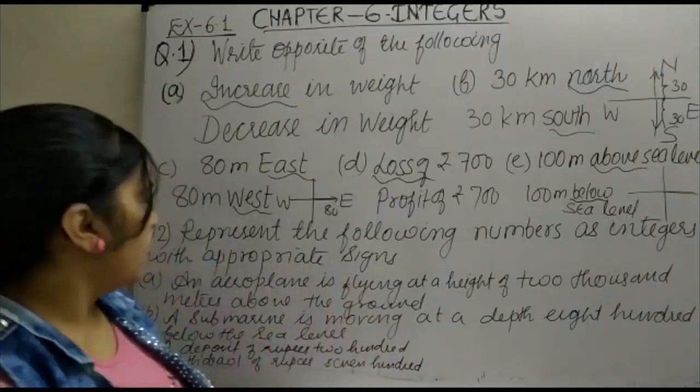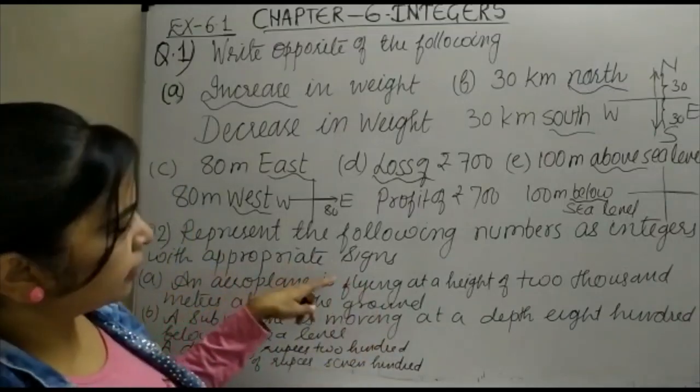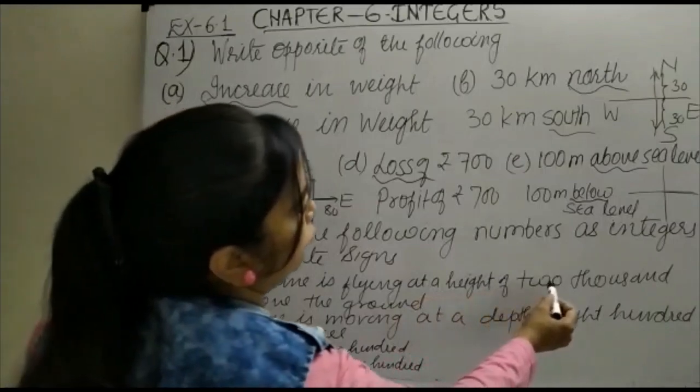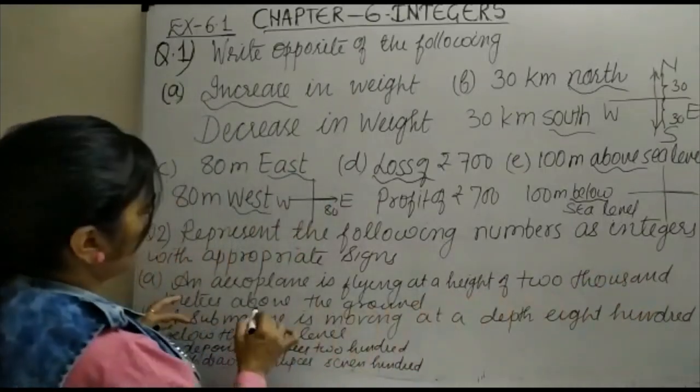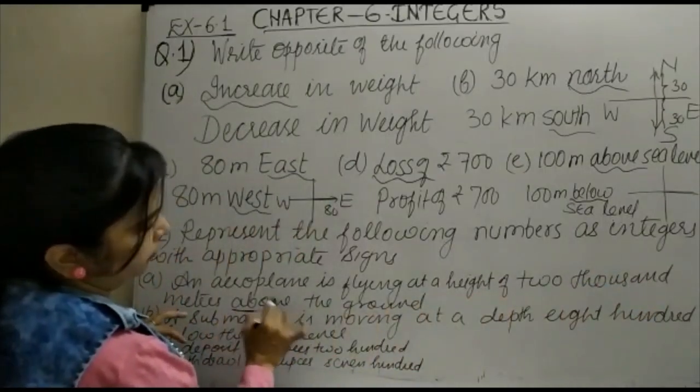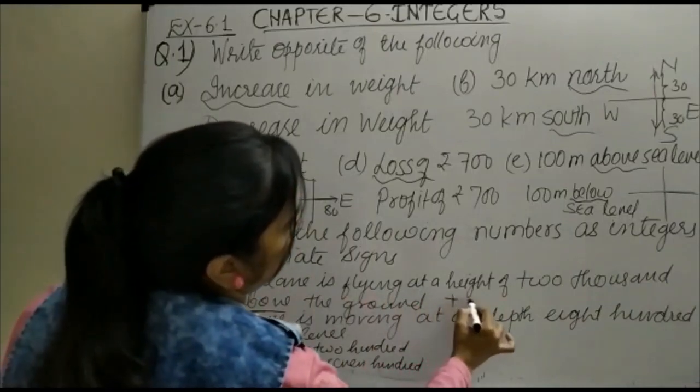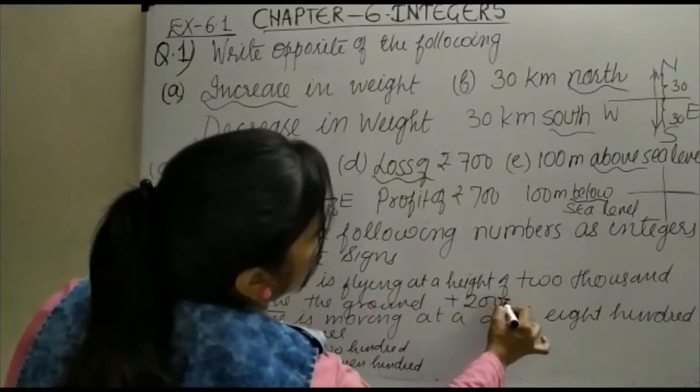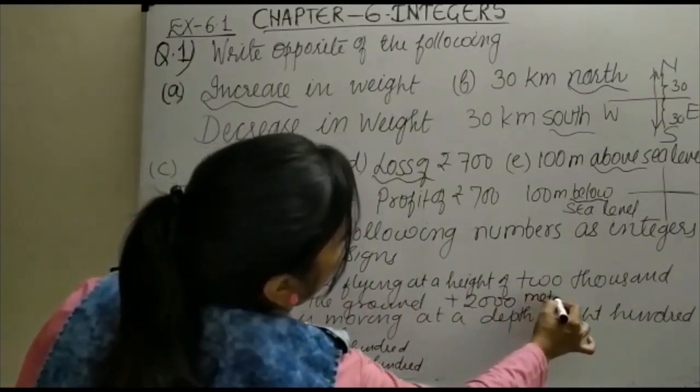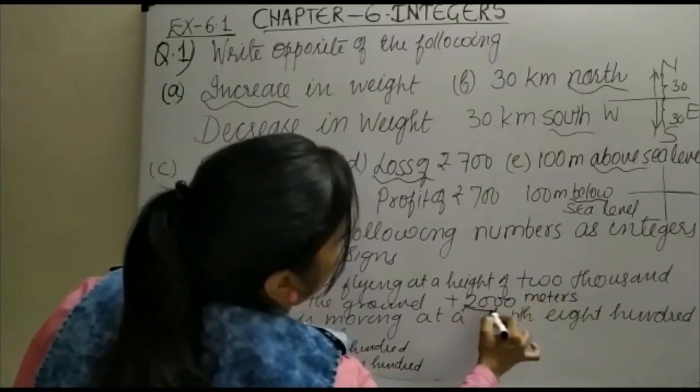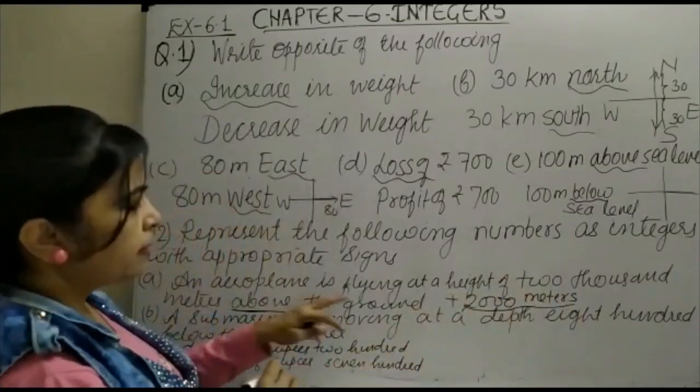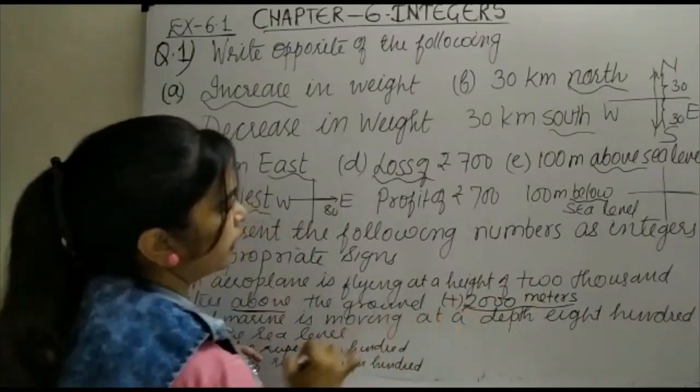An aeroplane is flying at a height of 2000 meters above. Above is positive, so this is plus 2000 meters. Plus shows above.